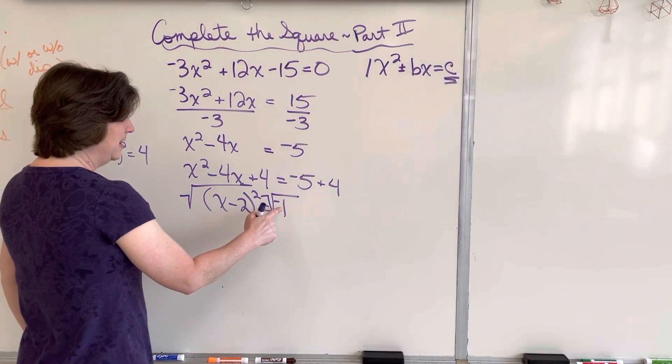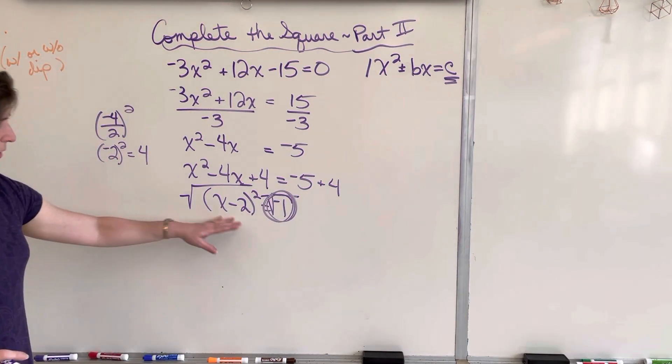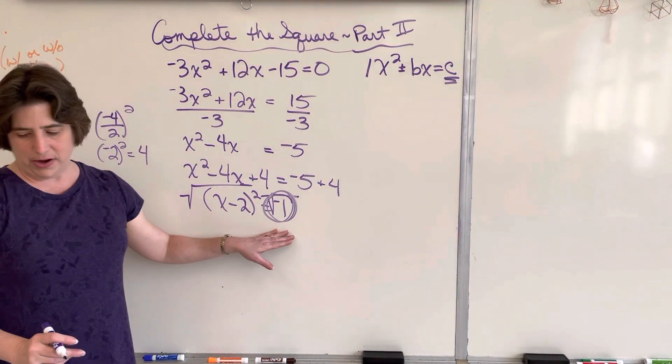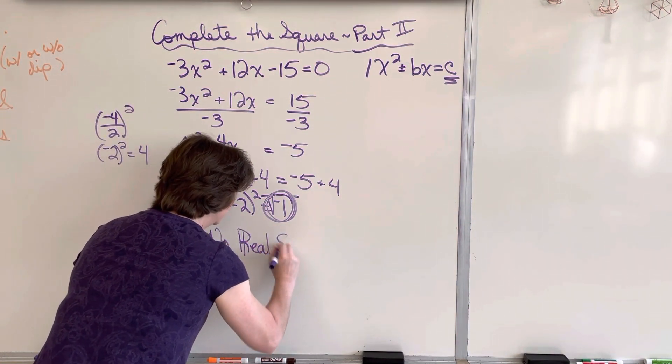So as soon as I saw that I had a negative 1 over here, that my perfect square trinomial, once I factored, equals a negative number, I'm going to say no real solutions.